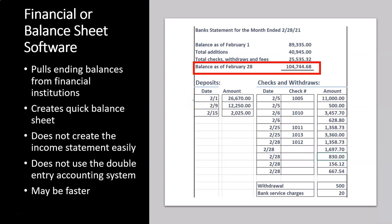The primary purpose of this type of software is to connect to all your financial institutions and take the ending balance. So it creates the balance sheet quite well. And it doesn't only connect to the bank — it can connect to all your financial institutions. So it can basically create your financial balance sheet, and then you'd have to supplement it with anything else.